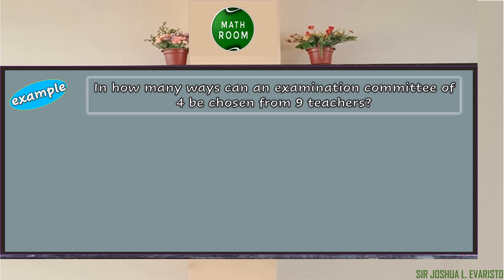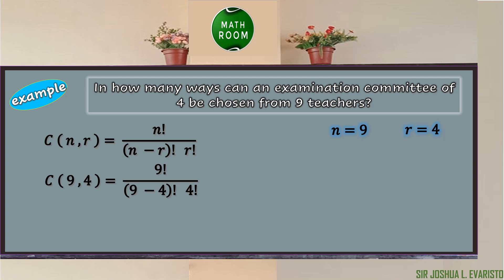Let us first identify N and R in the given problem. Since we have a total of 9 teachers, N = 9. Also, we are going to choose 4 examination committee members, thus R = 4. Given the formula C(N, R) = N! / [(N − R)! × R!], we can substitute the given values: C(9, 4) = 9! / [(9 − 4)! × 4!].